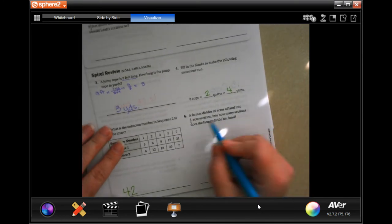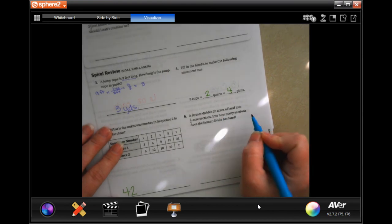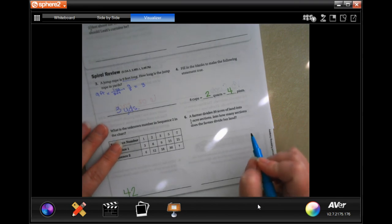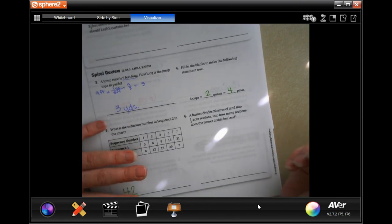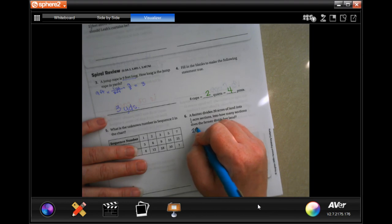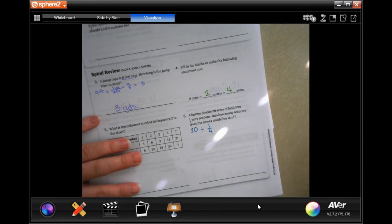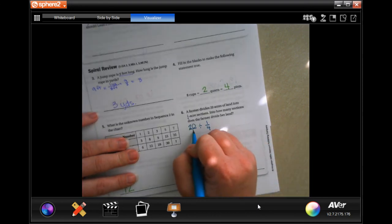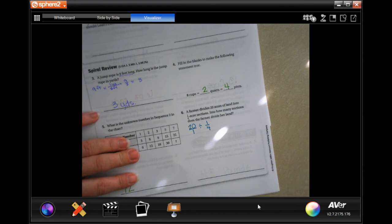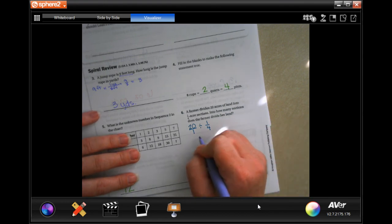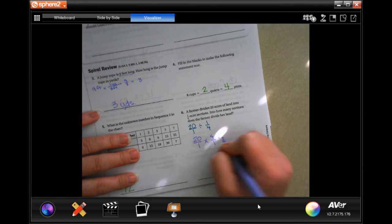All right, a farmer divides 20 acres of land into one quarter sections. How many sections does the farmer have to divide her land? So 20 acres, and they're dividing it into quarters. I'm going to put that 20 over one so we have fractions we're working with. And we know that when we are dividing fractions, we keep, we change, and we flip. And now four times two is eight, four times zero is zero over one. Eighty sections.